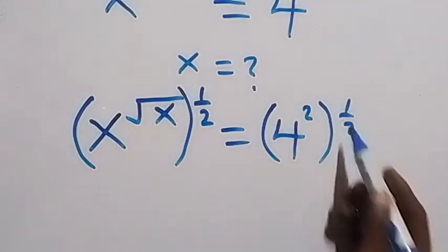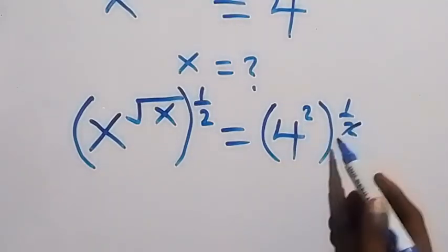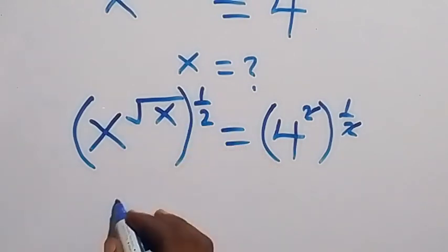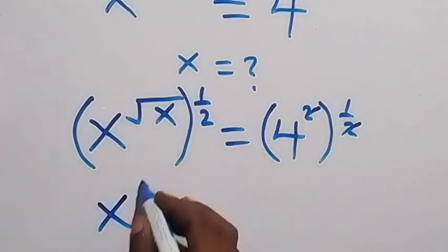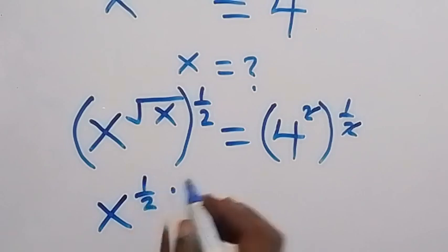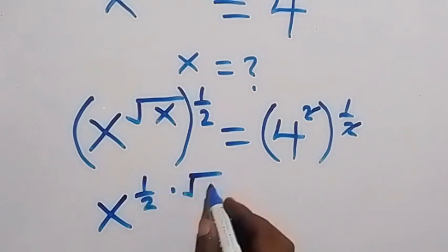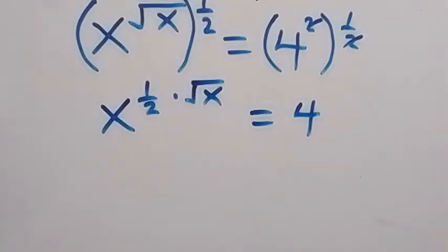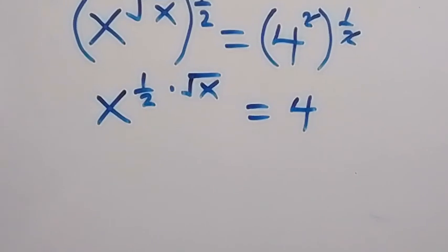So half cancels these two here. Then when this power multiplies, it comes inside here. We have x raised to power half, then raised to power root x, which is equal to 4. We can also write this another way.